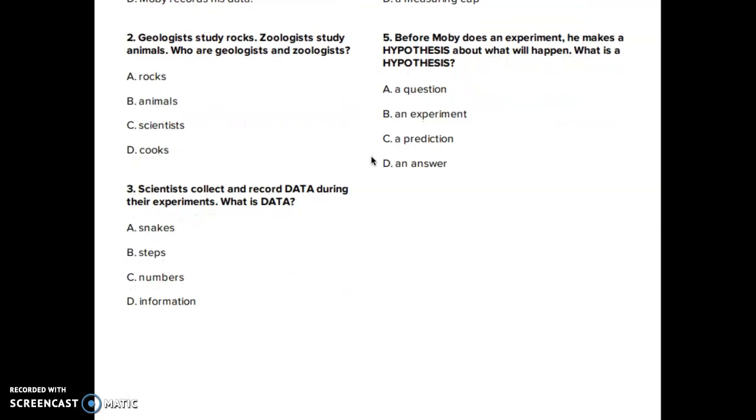Number 5. Before Moby does an experiment, he makes a hypothesis about what will happen. What is a hypothesis? A. A question. B. An experiment. C. A prediction. D. An answer.